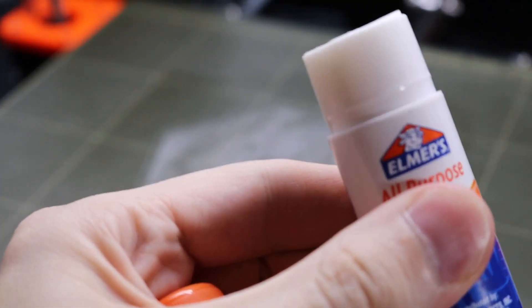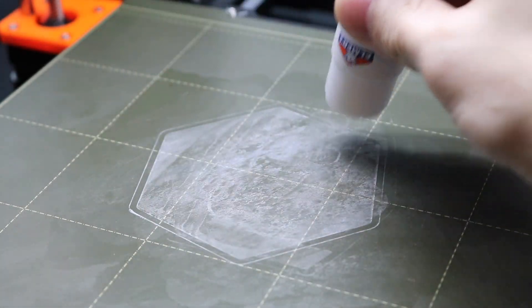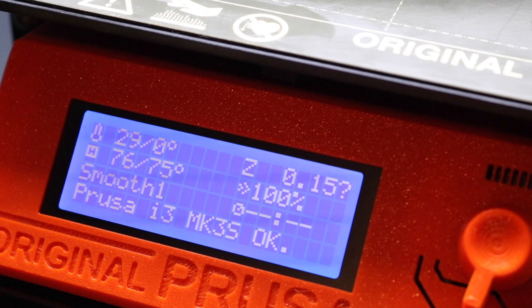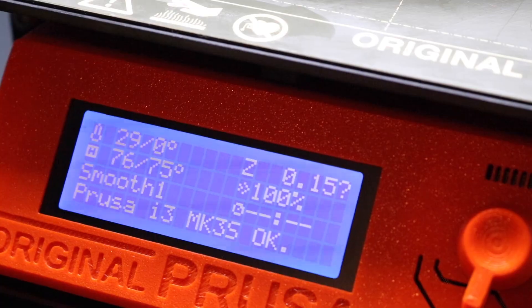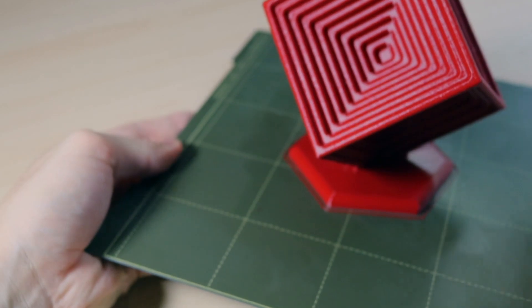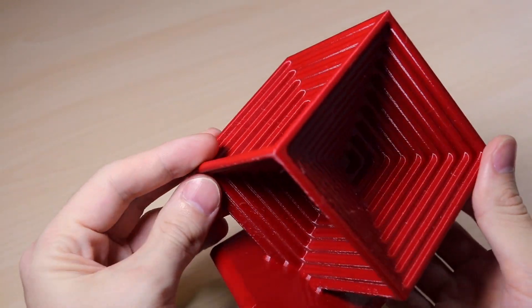In addition to reducing the speed, using a glue stick on your PEI bed is a great idea, not just to promote adhesion, but also to allow you to remove the part after it's finished printing. Because of its high print temperature, PETG can really bite down on your print surface, so the glue stick allows you to create a barrier that makes popping it off a bit easier. You can see here my strategy for removing a part involves flexing the bed and then pulling the part off.